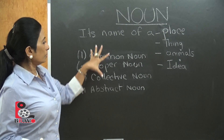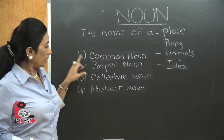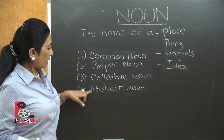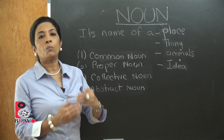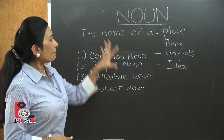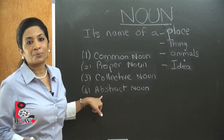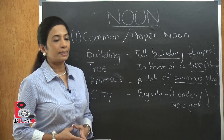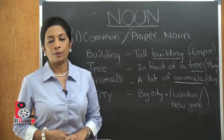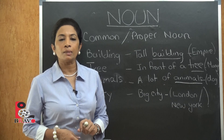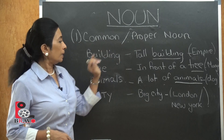Noun is also divided into four sections: common noun, proper noun, collective noun, and abstract noun. We are going to cover these four sections one by one in detail. Let's look at the first two — common noun and proper noun — because one is connected to the other.